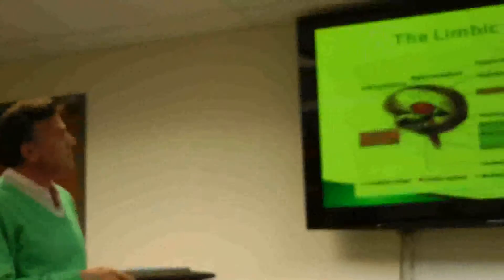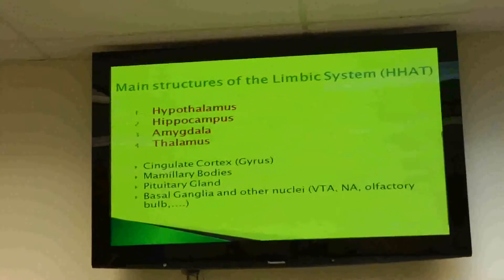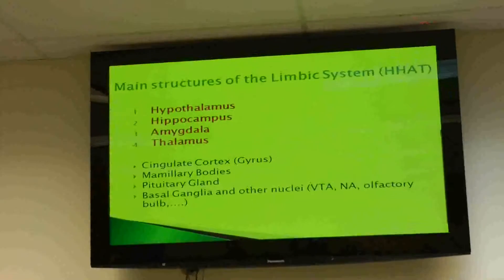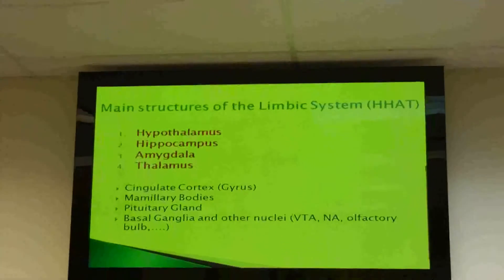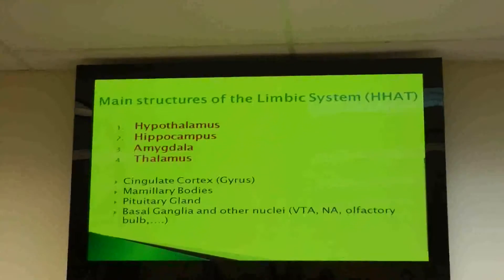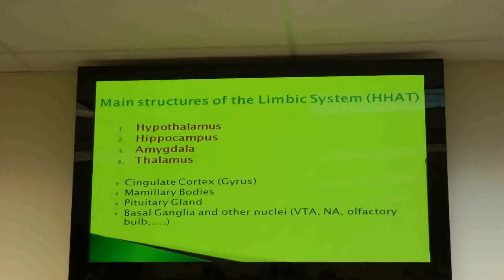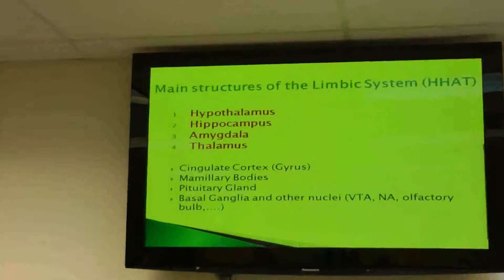The main structures are HAT: hypothalamus, hippocampus, amygdala, and thalamus, along with a bunch of other structures. In terms of function, it's mainly responsible for our subconscious, automatic, and reactive thinking.